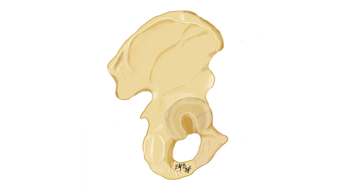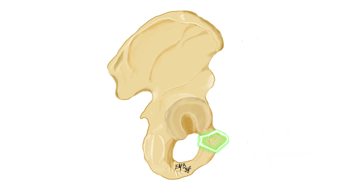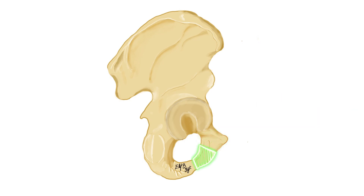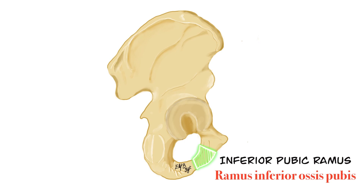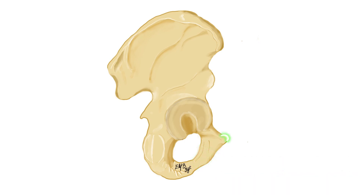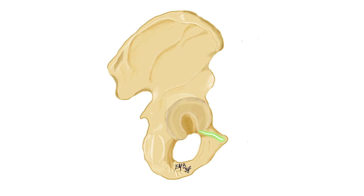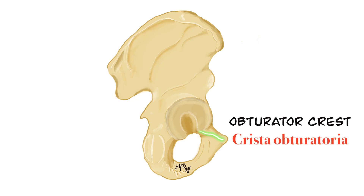Now let's focus on the structural anatomy of the pubis from the lateral aspect. The pubic bone, or os pubis, has a body and a superior and inferior ramus. The upper ramus that passes upward to the acetabulum is called the superior ramus of os pubis, or ramus superior osis pubis in Latin. The inferior ramus is also called ramus inferior osis pubis. The tubercle located superolateral to the body of the pubic bone is the pubic tubercle, or tuberculum pubicum in Latin. This tubercle forms the medial attachment of the inguinal ligament. Medial to the pubic tubercle, there is a sharp margin called the obturator crest, or crista obturatoria in Latin.